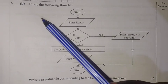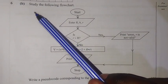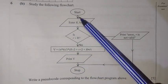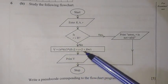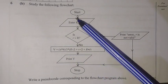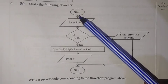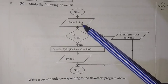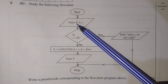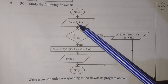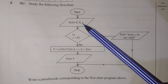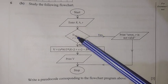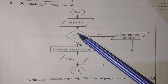We are now answering question 6b, which reads: study the following flowchart. Here we have the flowchart. You can see the start of the program, then the inputs: enter R, h, and r — where capital R represents the bigger radius and small letter r represents the smaller radius.